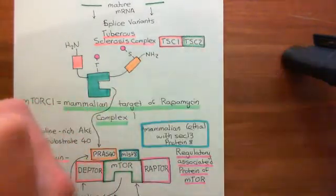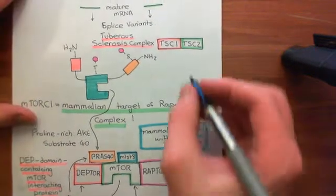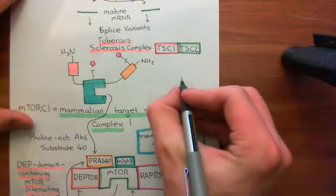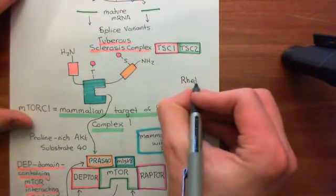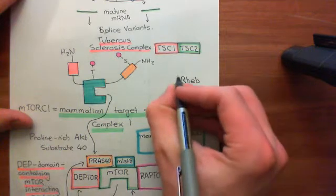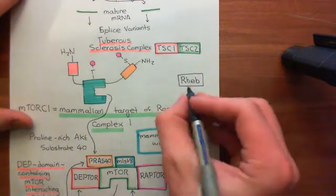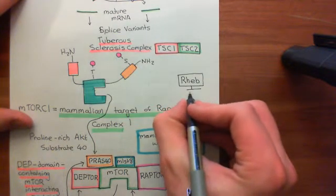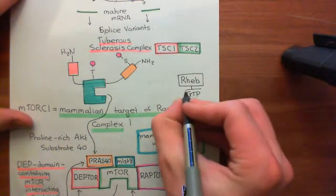This complex of these two proteins usually inactivates a monomeric G protein — and we're now going to see another monomeric G protein. This monomeric G protein is called RHEB. RHEB is a monomeric G protein, which means it can be in two states: an on state where it has GTP bound to it, or an off state where it has GDP bound to it.